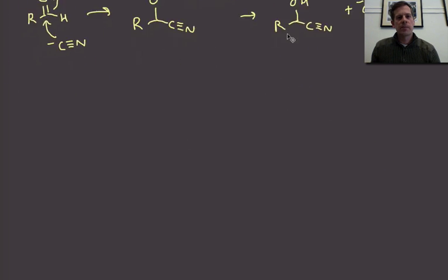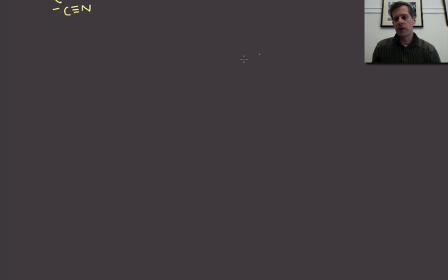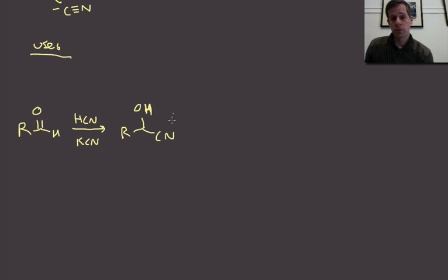Why is this useful? It turns out that these cyanohydrin products have a number of different uses and let us start to get into some complexity. Overall, we're going to take an aldehyde, do cyanohydrin formation with HCN and KCN to get our cyanohydrin. This is all just straightforward chemistry of nitriles which we'll talk about in detail in the next section, but for now we can use this as a tool.